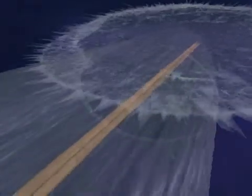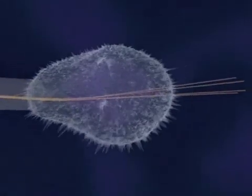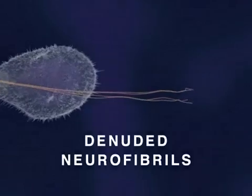Ultimately, both the developing neurite and its growth cone collapse, and some denuded neurofibrils form aggregates, or tangles, as depicted here.